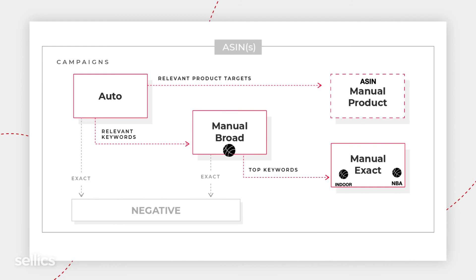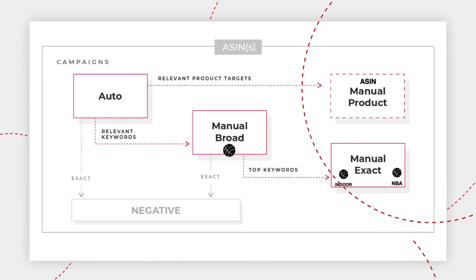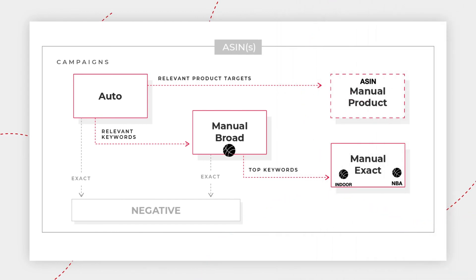Ultimately, at the end of this process, we have created a self-serving automated process to keep updating your keyword list, making sure that you're always targeting the right search terms and ASINs, optimizing your campaigns, and hopefully growing your revenue and reducing your ad waste. In the next video, we will look at how to map this structure and this automation into the Selix platform.